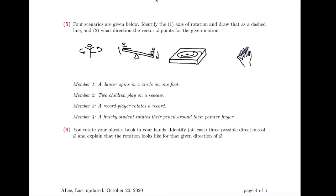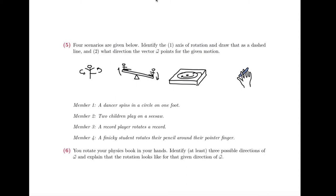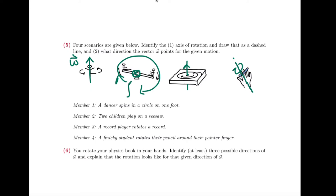Four scenarios are given — identify the axis of rotation, draw it as a dashed line, and draw the direction omega points. This is the right-hand rule. You're looking for the direction of the angular velocity, which is a vector that points in a straight line. In this case, omega points straight up because I can point my thumb straight up and curl my fingers in the same direction that the dancer is spinning. For the merry-go-round, it appears to rotate in the clockwise direction. If I curl my right-hand fingers clockwise on the page, my thumb points into the screen — so omega points into the screen.